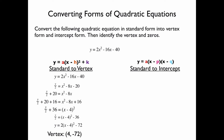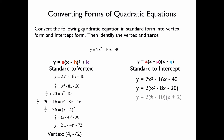Now let's convert standard form into intercept form. Start with standard form and factor by first taking out the greatest common factor of 2. Then find two factors of negative 20 that add up to negative 8 — those are negative 10 and positive 2. So we factor into 2 times x minus 10 times x plus 2. Rewriting x plus 2 as x minus negative 2, our two zeros are 10 and negative 2.